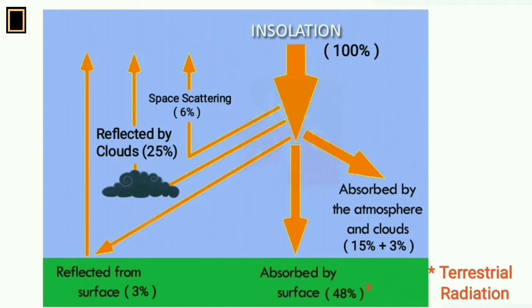Among 34%, 6% is space scattering, 25% reflected by the cloud, and 3% reflected by the earth's surface. Remaining 66% is absorbed by the surface and atmosphere which is responsible to warming up of the atmosphere. It is known as effective solar radiation.